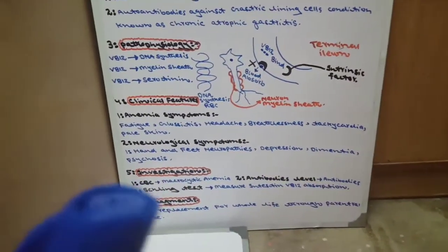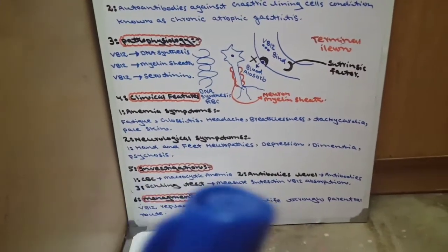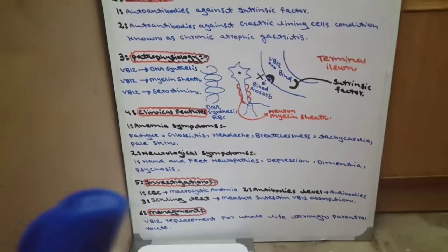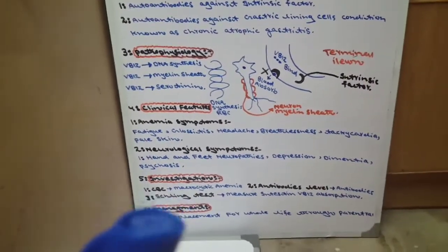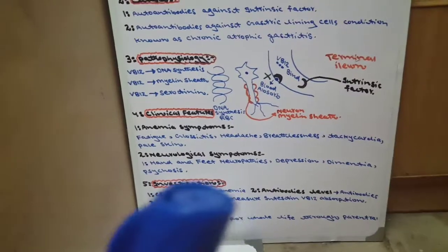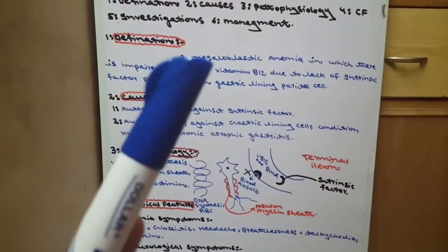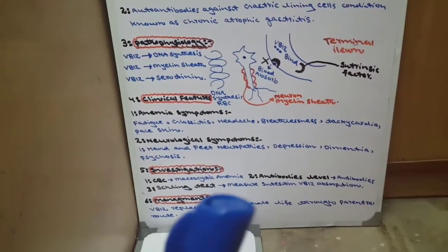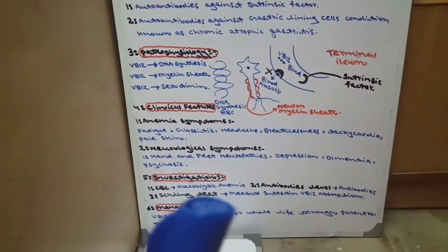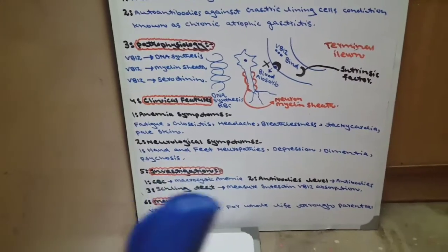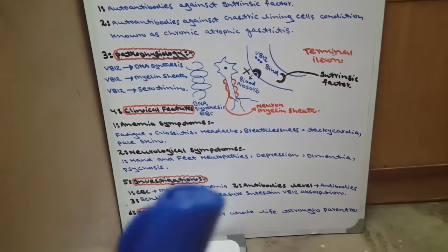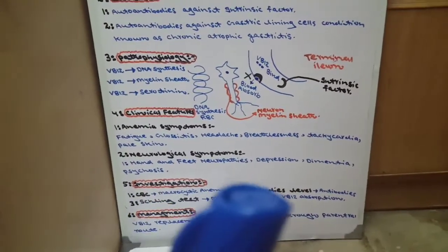Now the investigations. We have three investigations: one is CBC, two is antibody levels, three is Schilling test. In CBC, we will see macrocytic anemia and megaloblastic cells.